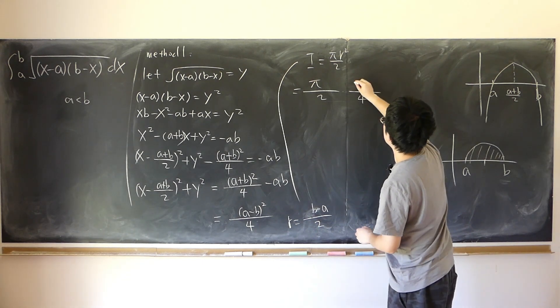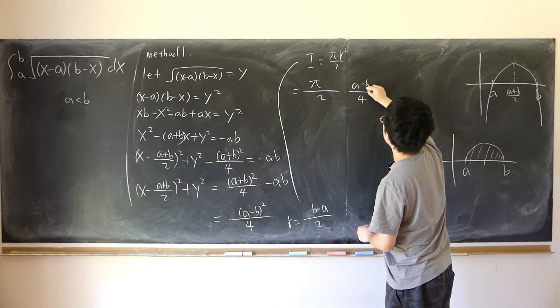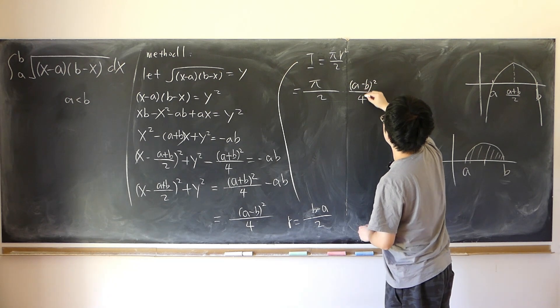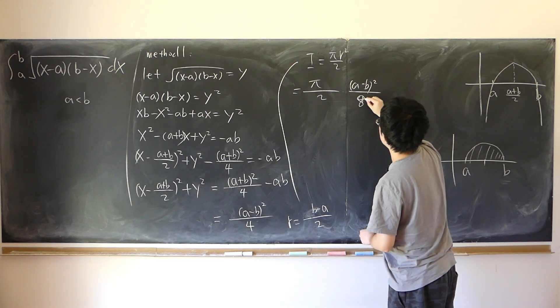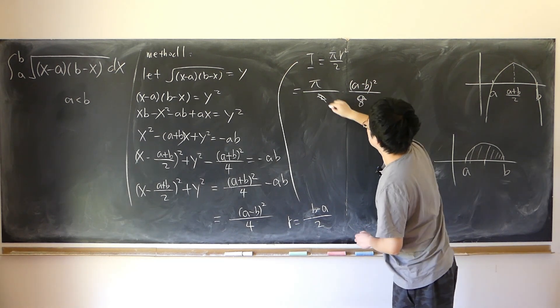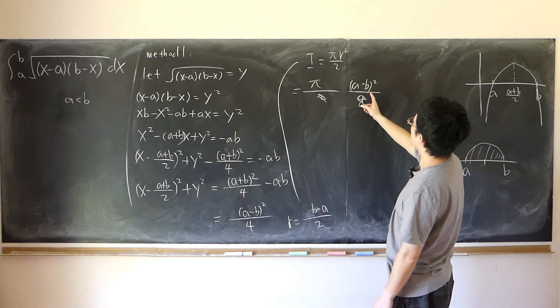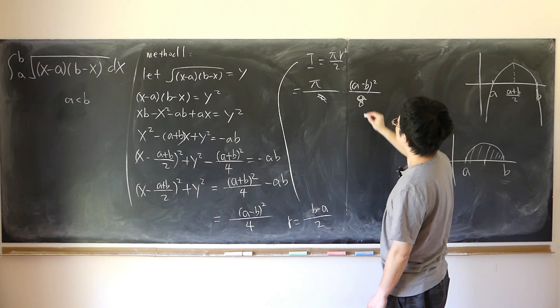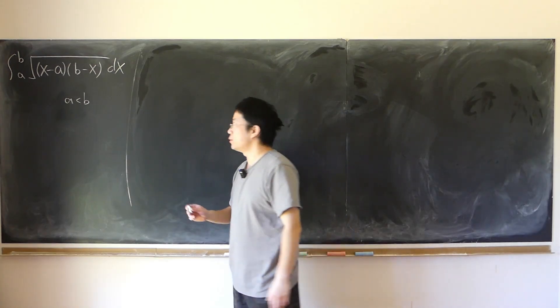So the result is π times (a minus b)² over 8. Method two: we use the Euler transformation.